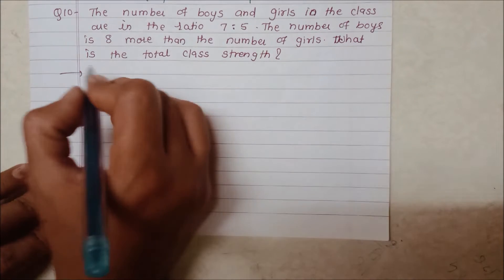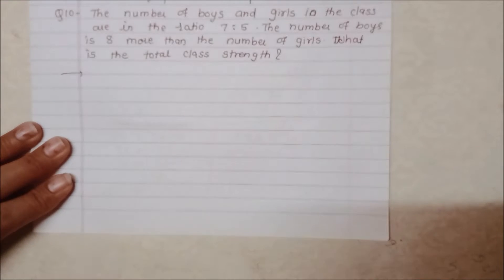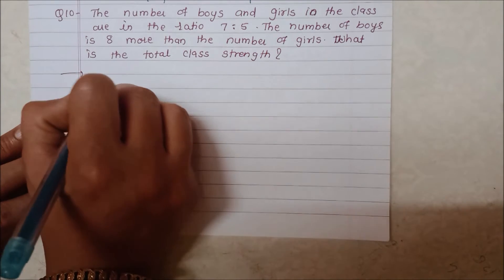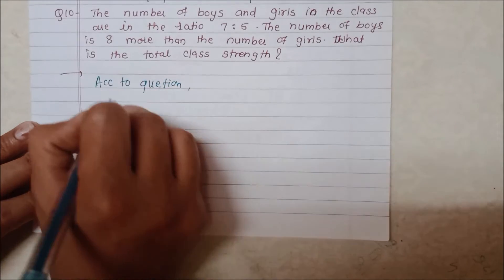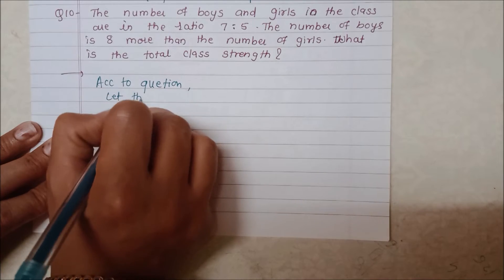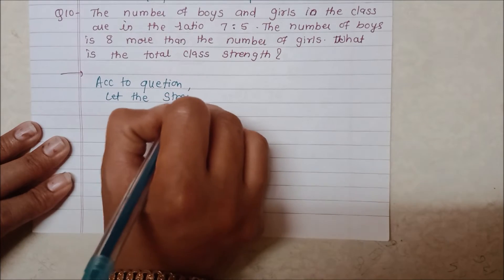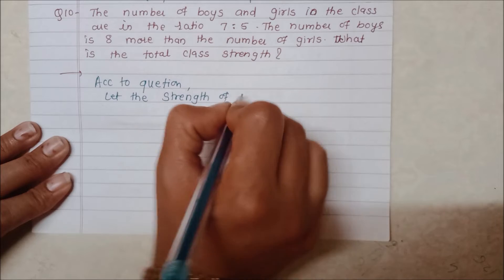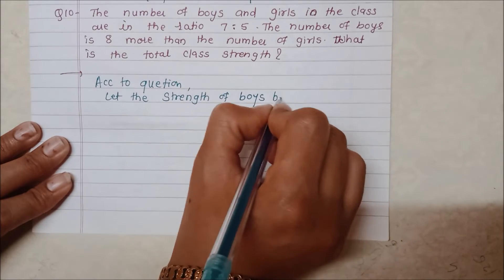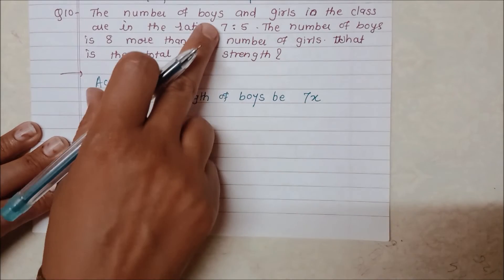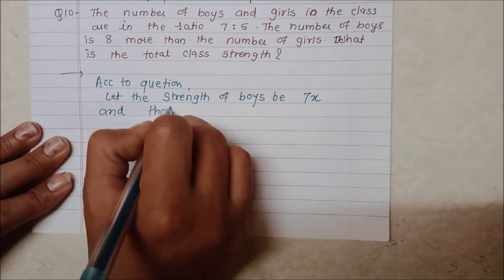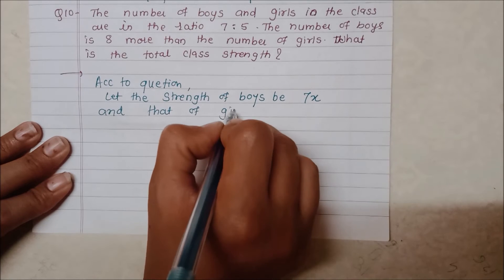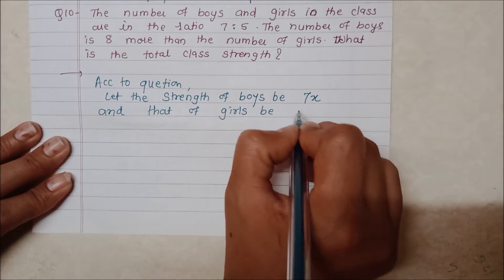So here, suppose we have to take one thing according to question. Let the number of boys be 7x. We have taken the number of girls as 5x, right?